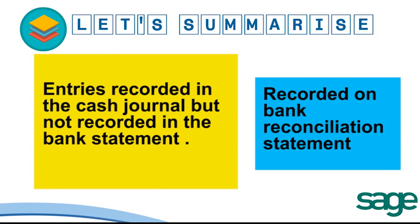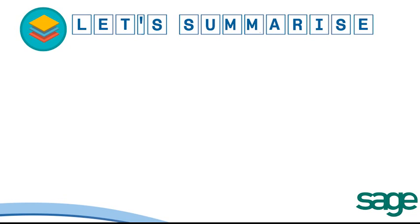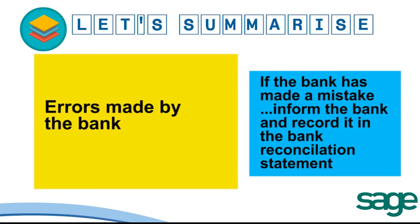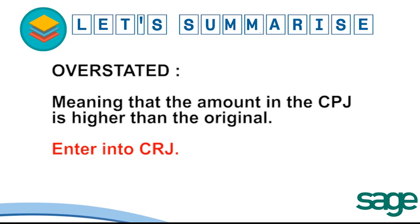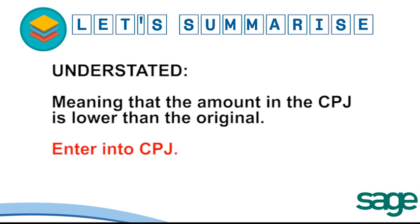Entries recorded in the bank statement but not recorded in our cash journals are updated in the business's cash journal, either CRJ or CPJ. Entries recorded in the cash journals but not recorded in the bank statement are recorded on the bank reconciliation statement. Errors can be made by the bank or by the business in our journals. If the bank has made a mistake, inform the bank and record it in the bank reconciliation statement. If a cash discrepancy exists between the bank statement and our cash journals, correct the errors in our journals. An overstated amount is entered into CRJ; an understated amount is entered into CPJ.